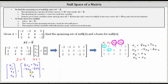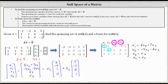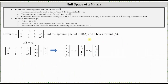Now let's write this as a linear combination of two vectors. We have x sub three times the vector formed using the coefficients of x sub three — which are eight, negative four, one, zero — plus x sub four times the vector formed using the coefficients of x sub four — which are seven, negative three, zero, one. Since the solutions to matrix A times vector x equals zero are the linear combinations of the vectors (8, -4, 1, 0) and (7, -3, 0, 1), we can say the null space equals the span of these two vectors.